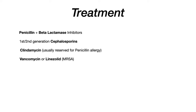Let's talk briefly about treatment for Staph aureus. The textbook answer is penicillins and first and second generation cephalosporins combined with beta-lactamase inhibitors. But on USMLE or COMLEX they're most likely going to give you MRSA — methicillin resistant Staph aureus — and for that you want to think about vancomycin or linezolid. In the case of penicillin allergy, the textbook answer is clindamycin.